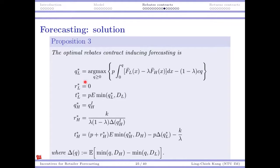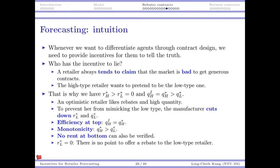The problem can still be solved analytically. Two key properties of the optimal rebate contract for inducing forecasting stand out. First, for the high demand type, the outcome is efficient (Q_HI = Q_H*). Second, for the low demand type, there is no rebate (R_L = 0). Let's understand why.